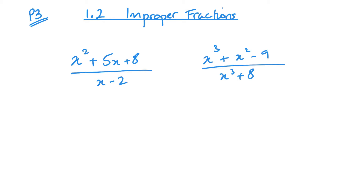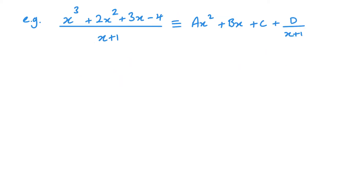So if the numerator's largest power is the same as or larger than the denominator's largest power, it's an improper fraction. There are two ways to solve a problem with improper fractions. In this example, the largest power is cubed, larger than the denominator, so it's improper. The question asks us to leave it in the form of a quadratic plus its remainder. One method is to use long division.